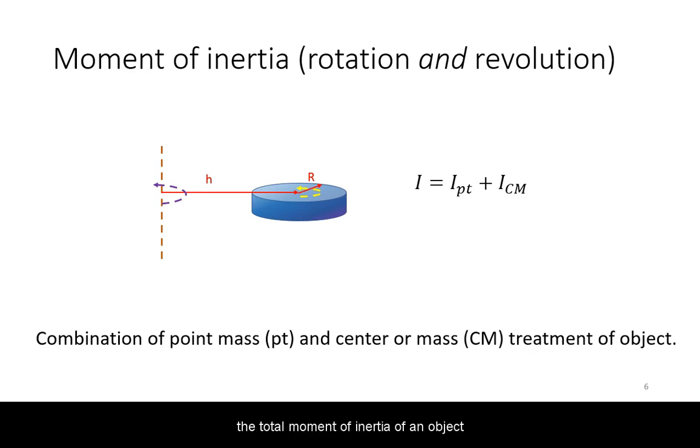the total moment of inertia of an object is the sum of its moment of inertia as if it were a point mass, plus its moment of inertia through its center of mass with an axis parallel to the new rotational axis.